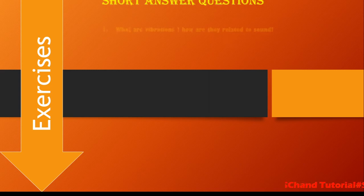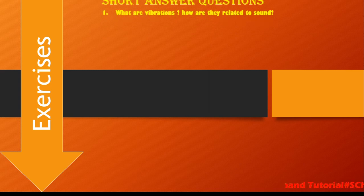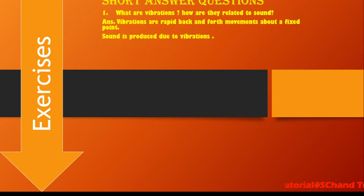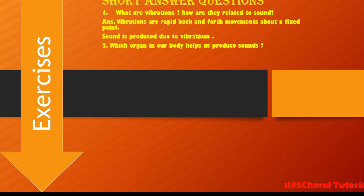The first question is: what are vibrations and how are they related to sound? Vibrations are the rapid back and forth movements about a fixed point. Sound is produced due to vibration — that is the relation. Sound is always produced due to vibration.